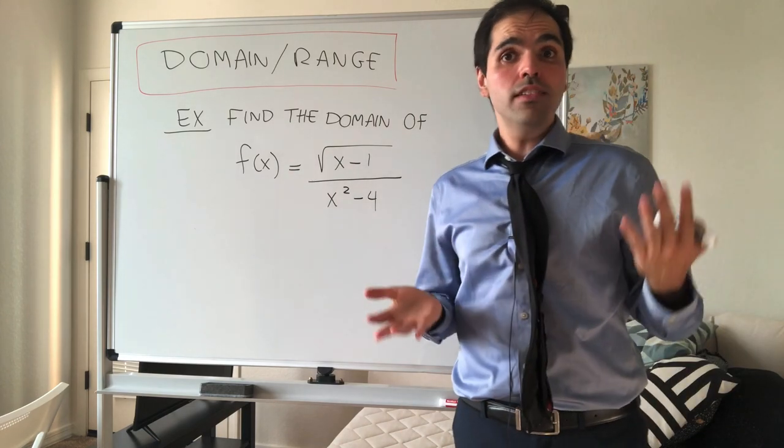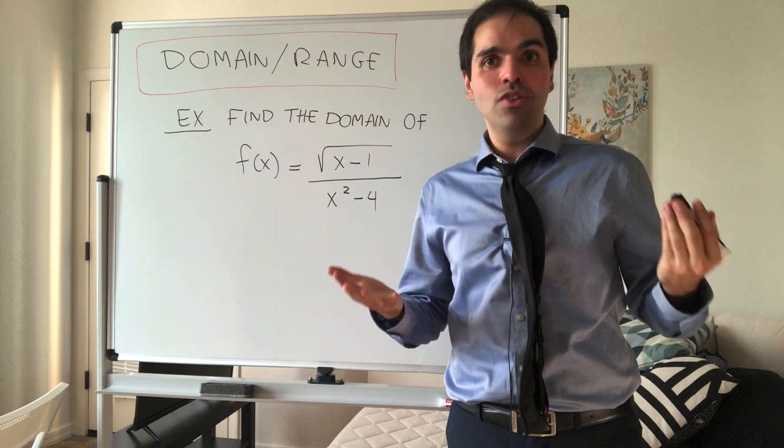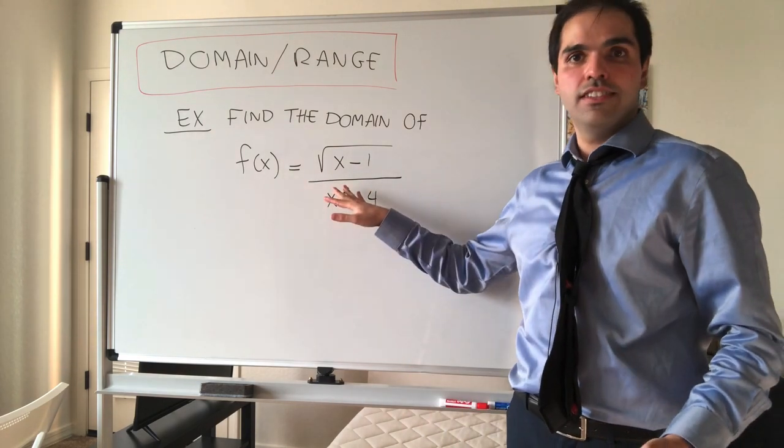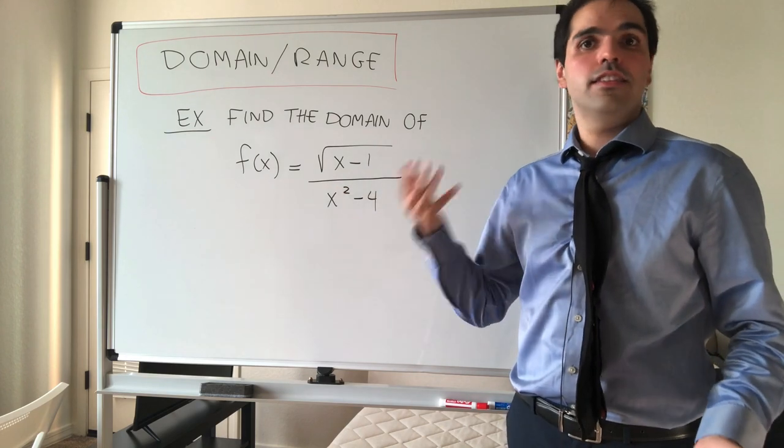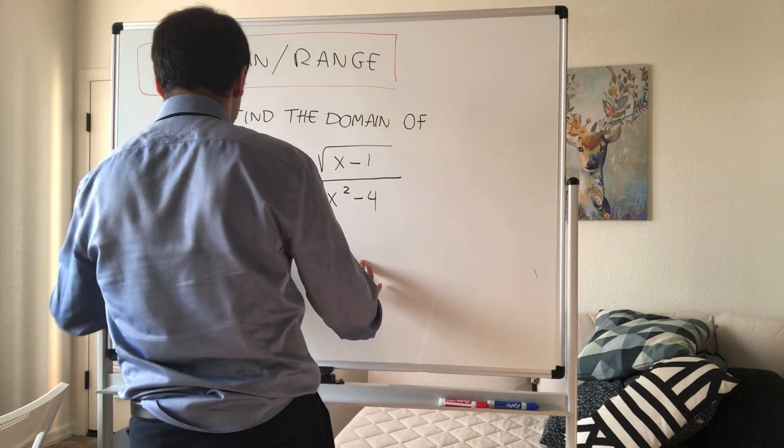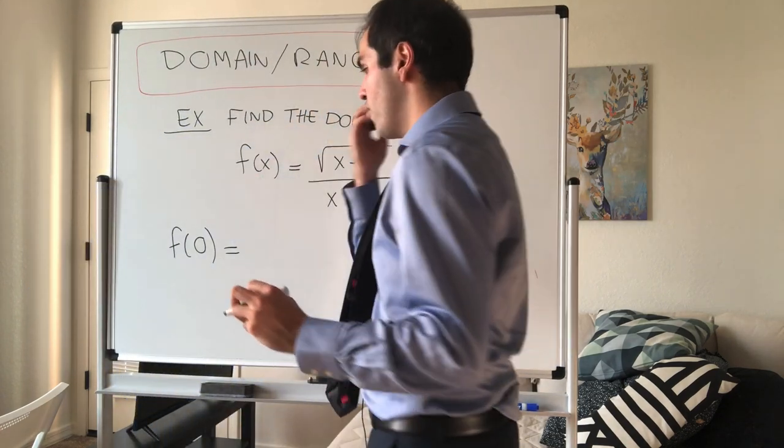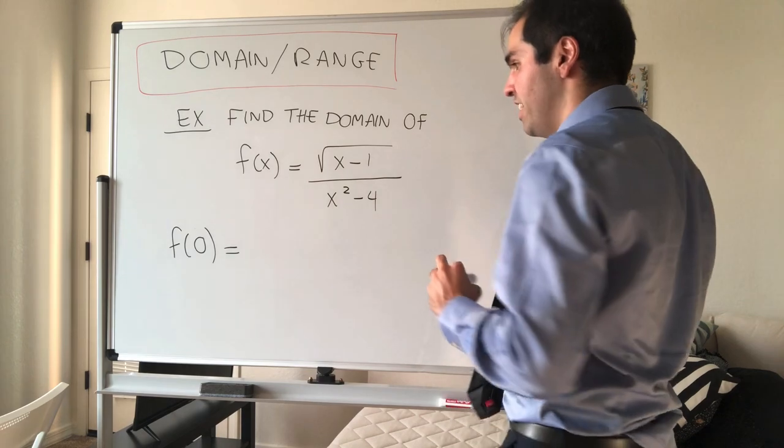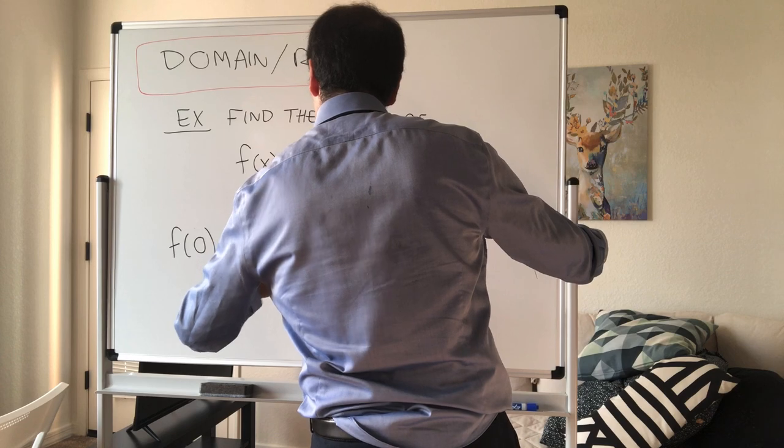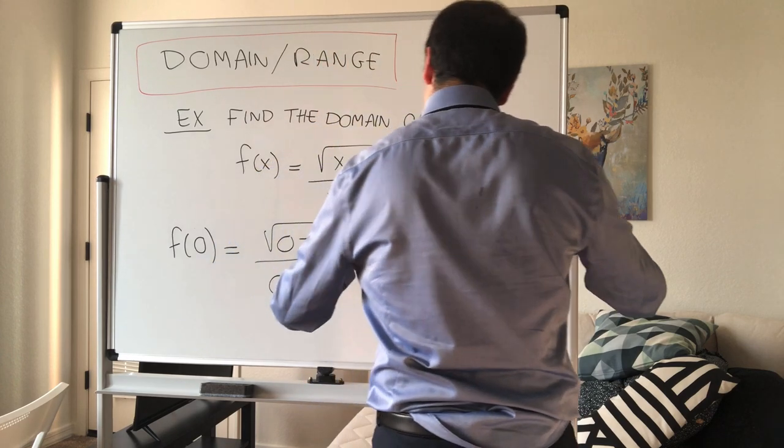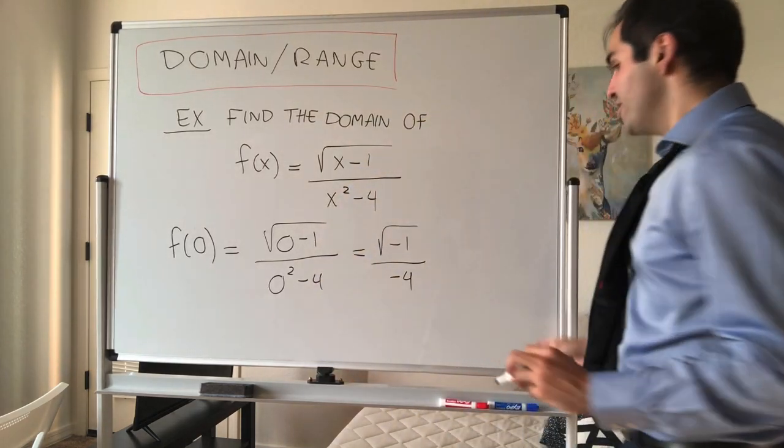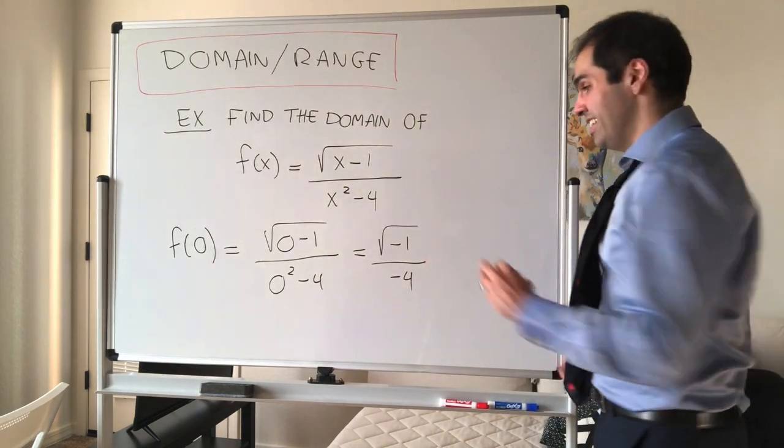Now what is the domain? It's just the set of values x, or the set of inputs, for which your function is defined. For instance, let me illustrate. Let's say you plug in f of 0. So let's say you plug in 0 for x and try to evaluate f at it. Then you get square root of 0 minus 1 over 0 squared minus 4, and that's square root of minus 1 over minus 4, which for our purposes is undefined.